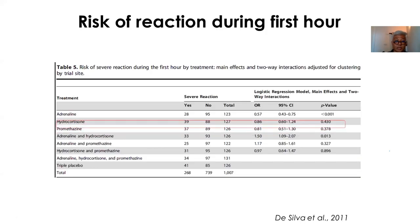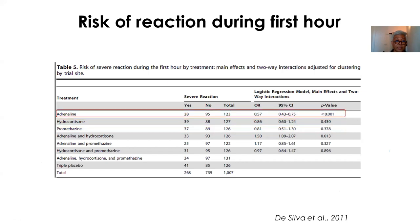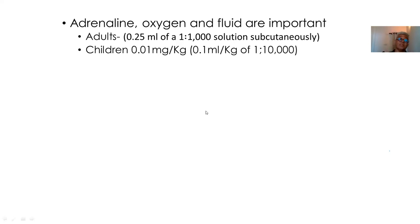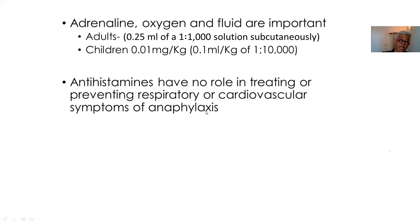Based on this evidence, patients should be pre-treated with subcutaneous adrenaline 0.25 mL of a 1:1000 solution before antivenom infusion. For children, 0.01 mg/kg subcutaneous is suggested, extrapolating from adult data and American Heart Association guidelines, though there is no direct evidence in children. Antihistamines have no role in treating or preventing the respiratory or cardiovascular symptoms of anaphylaxis.